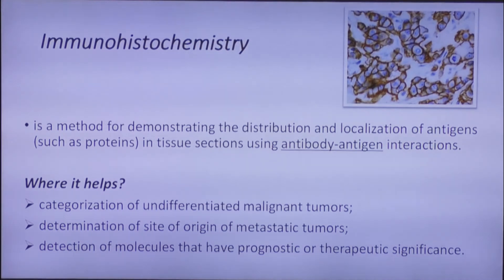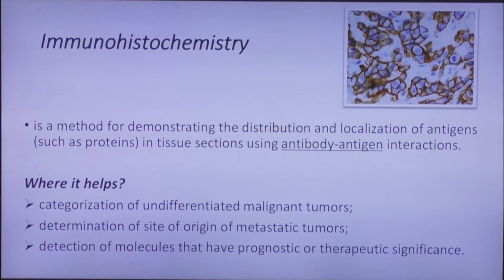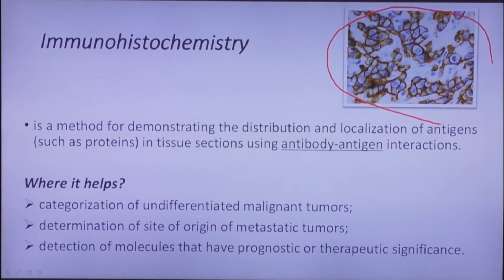I want to add a few words about the immunohistochemical method, which is widely used in tumor pathology. It is based on antibody-antigen interactions and can stain different tissues using different markers. If the tissue has receptors for them, it can help us in categorization of undifferentiated malignant tumors, in determination of the site of origin of metastatic tumors, and in detection of molecules that have prognostic and therapeutic significance. Here is an example of how immunohistochemistry looks.